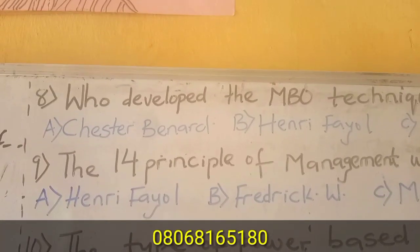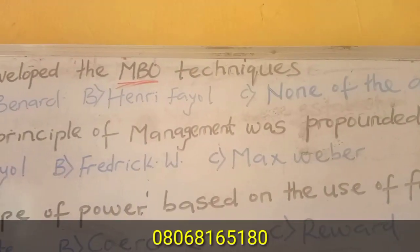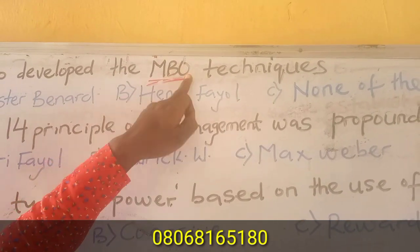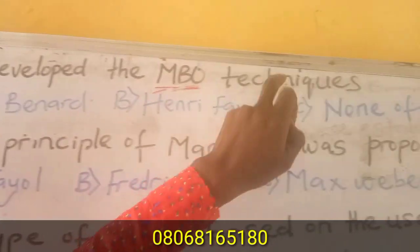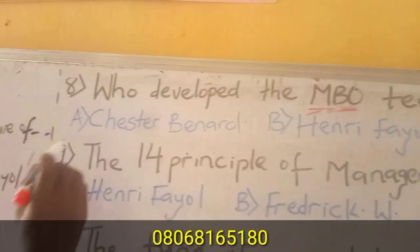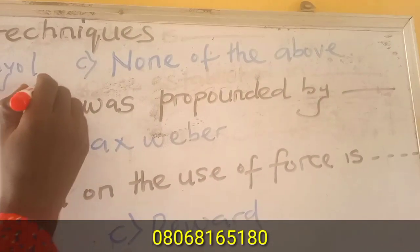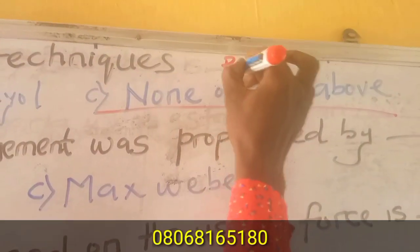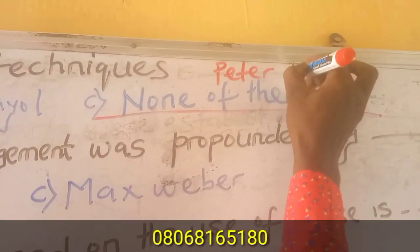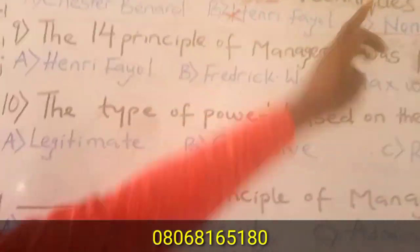Question eight: Who developed the MBO? MBO stands for Management by Objective. The answer is none of the above options listed. This technique was developed by Peter Drucker — Peter Drucker is the one who developed MBO. So the answer is none of the above.